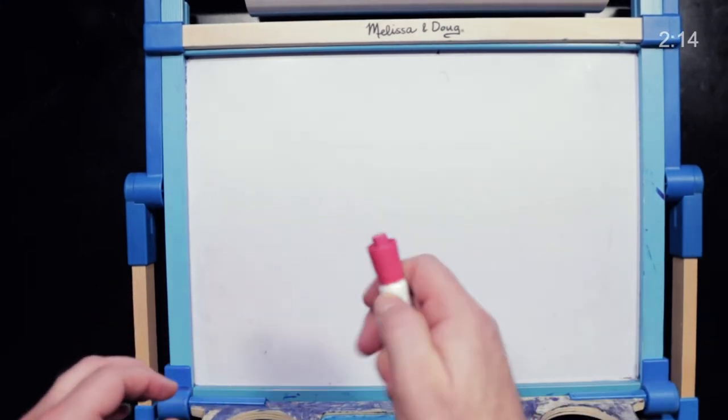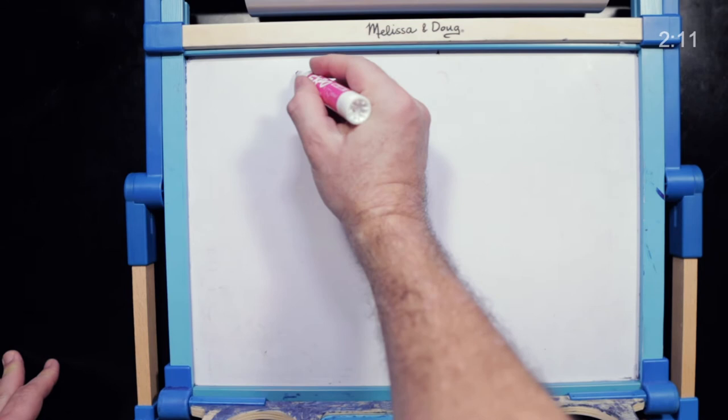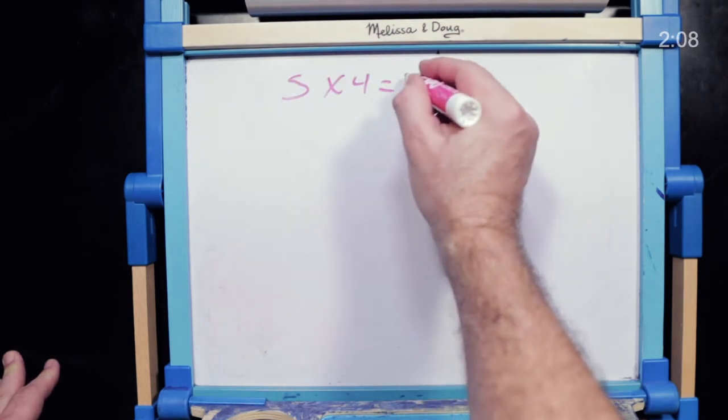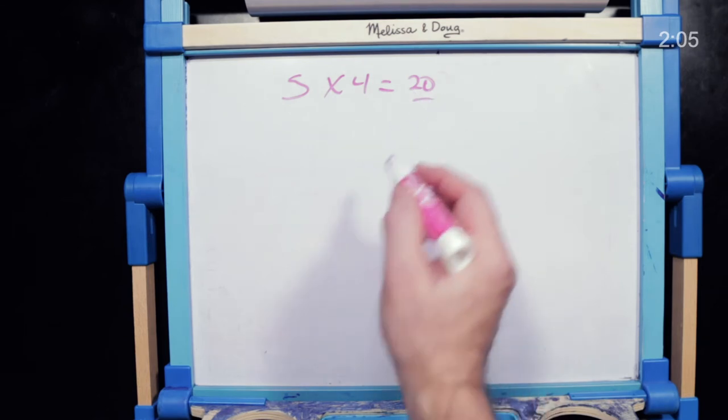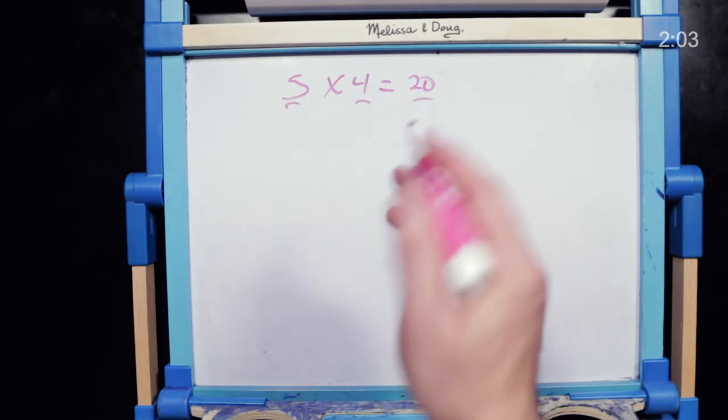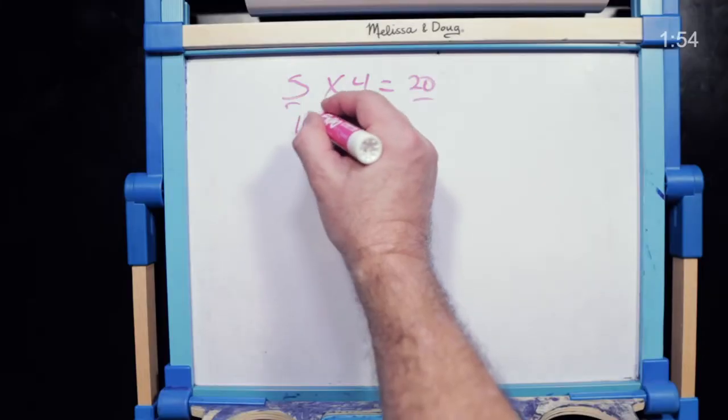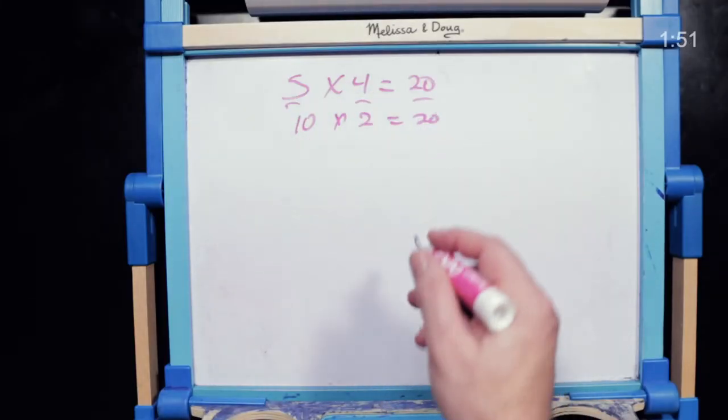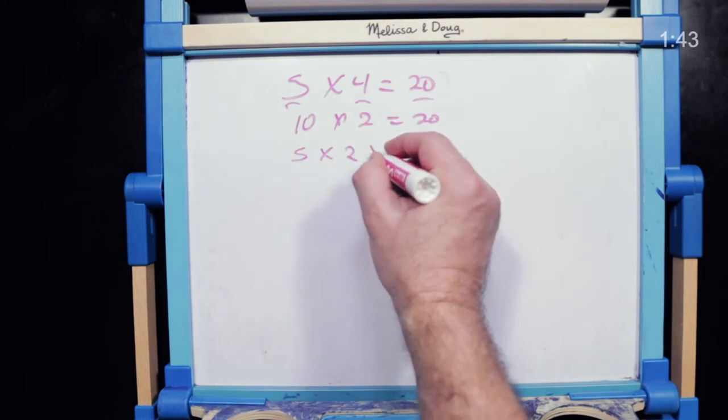Do you remember the concept of a factor from algebra? Let me grab a whiteboard. If you look at this equation: 5 times 4 equals 20. 20 is the product. 5 and 4 are the factors — in other words, they are the component parts that together produce the result. But 20 can be composed of other factors as well. 10 and 2 are also factors of 20. And we can break either of these equations down into 20's prime factorization: 5 times 2 times 2.